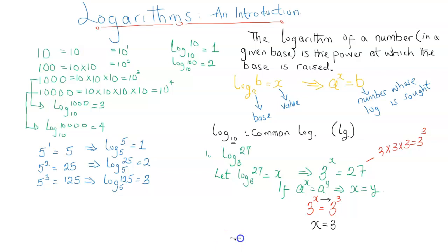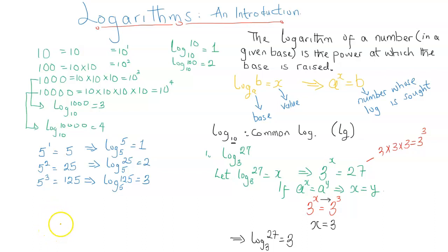Finally, this implies that the log of 27 to base 3 is equal to 3. This makes sense from the definition because 3 to the power of 3 is 27. In the next video, I'm going to be treating the laws of logarithms. Such laws would allow me to solve a problem like log 0.0001 to base 10. See you in the next video, thank you.